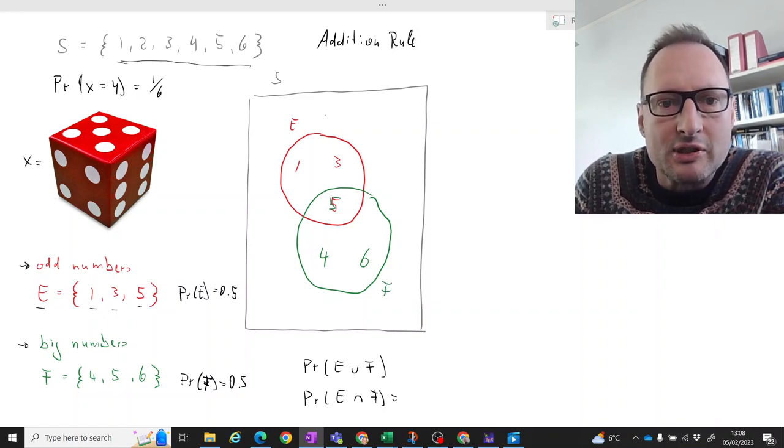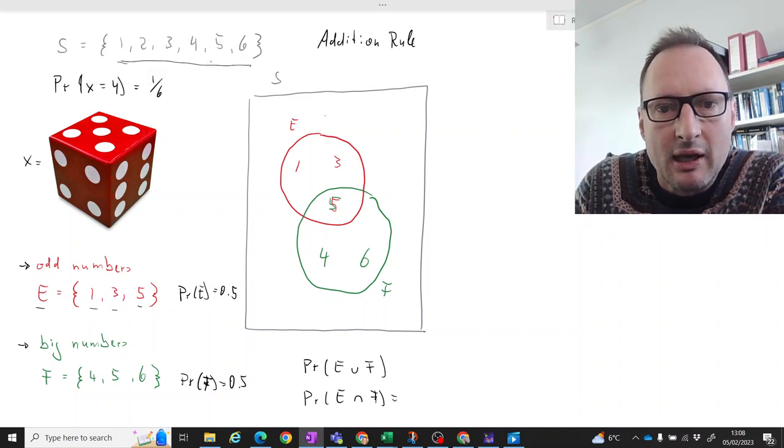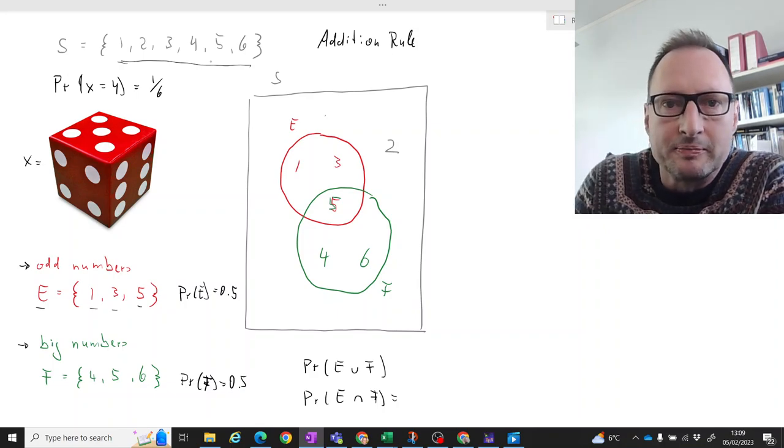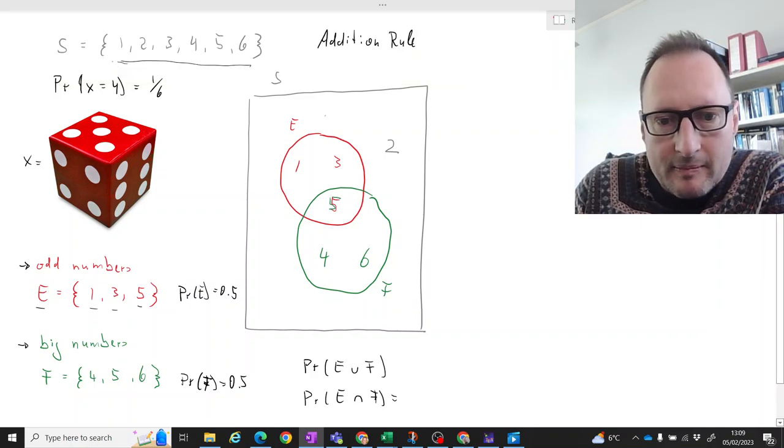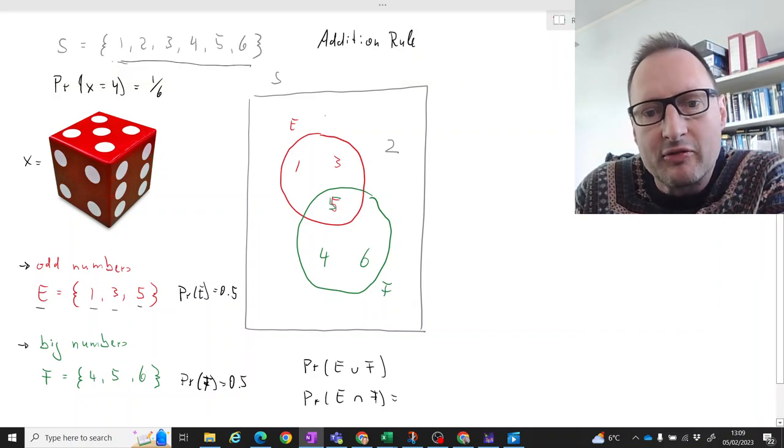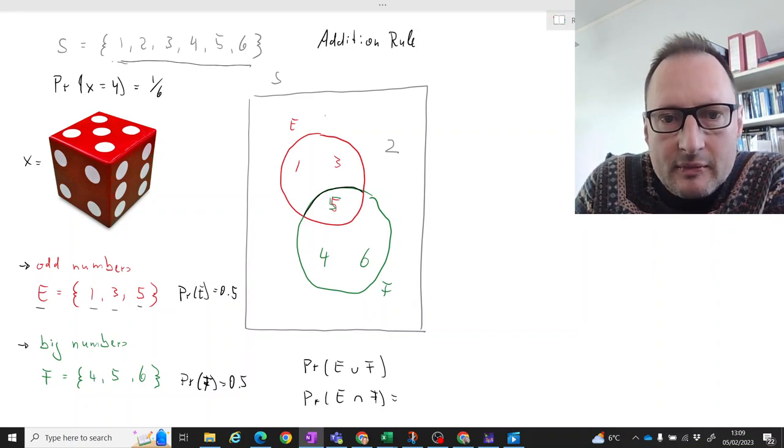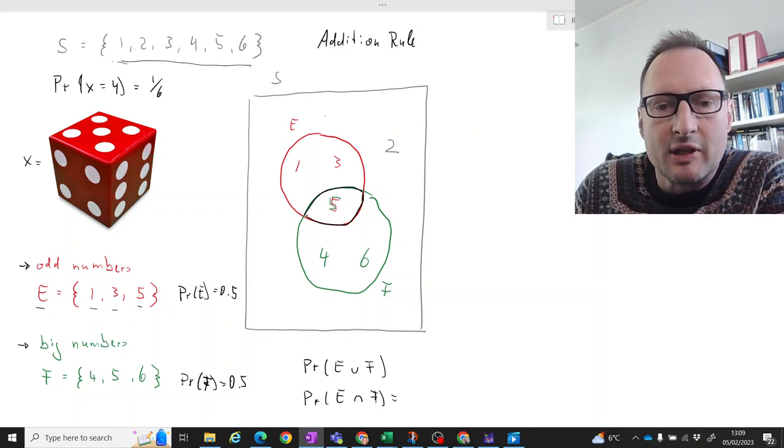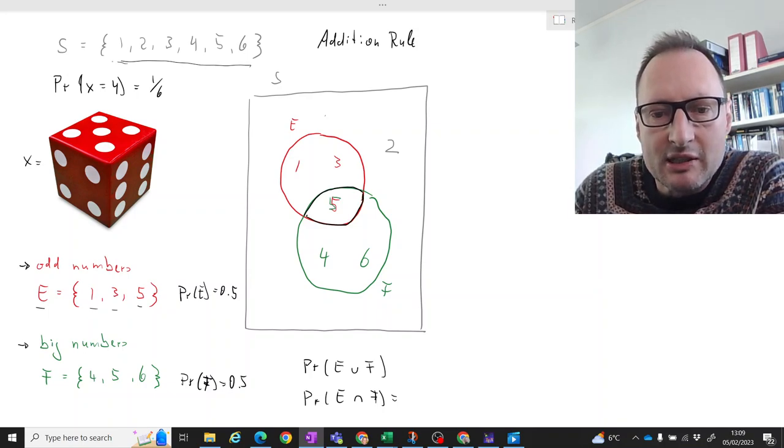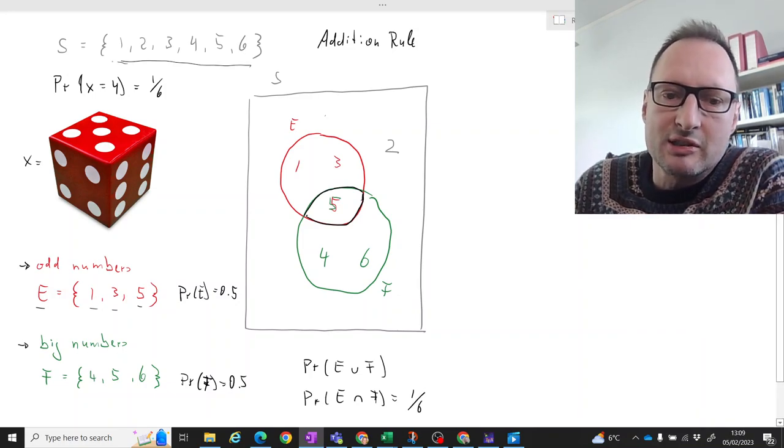And then outside of these two events, there is one additional number, and that is the 2. That's neither in E nor in F. So with this, it should be obvious that the probability that we have E and F, that is this intersection, is only 5. Only if we get a 5, we are in both E and F. So that is 1 over 6, because getting a 5, the probability is 1 over 6.